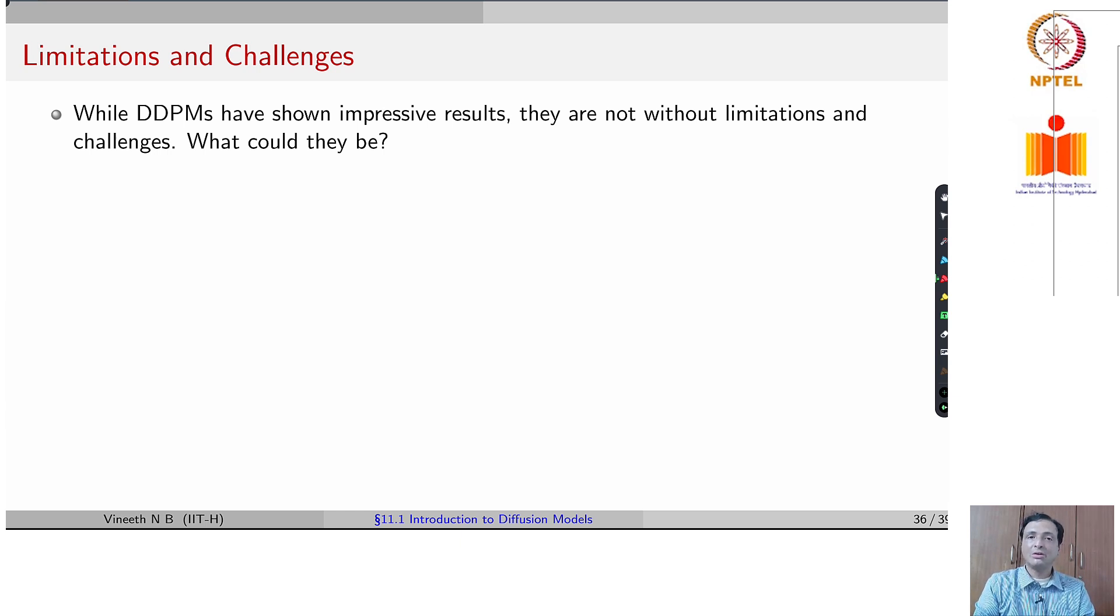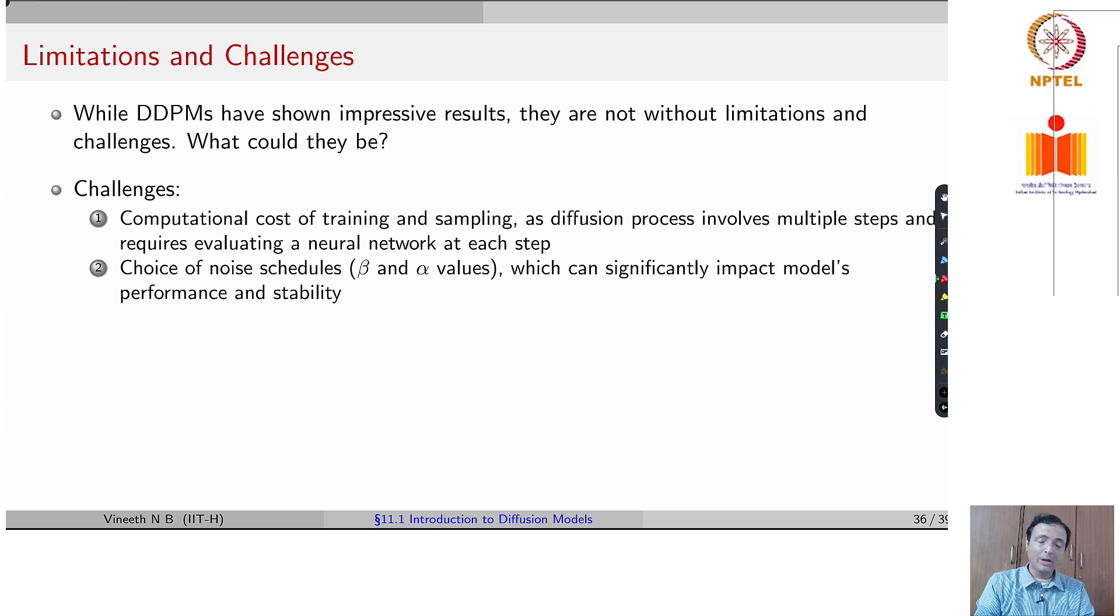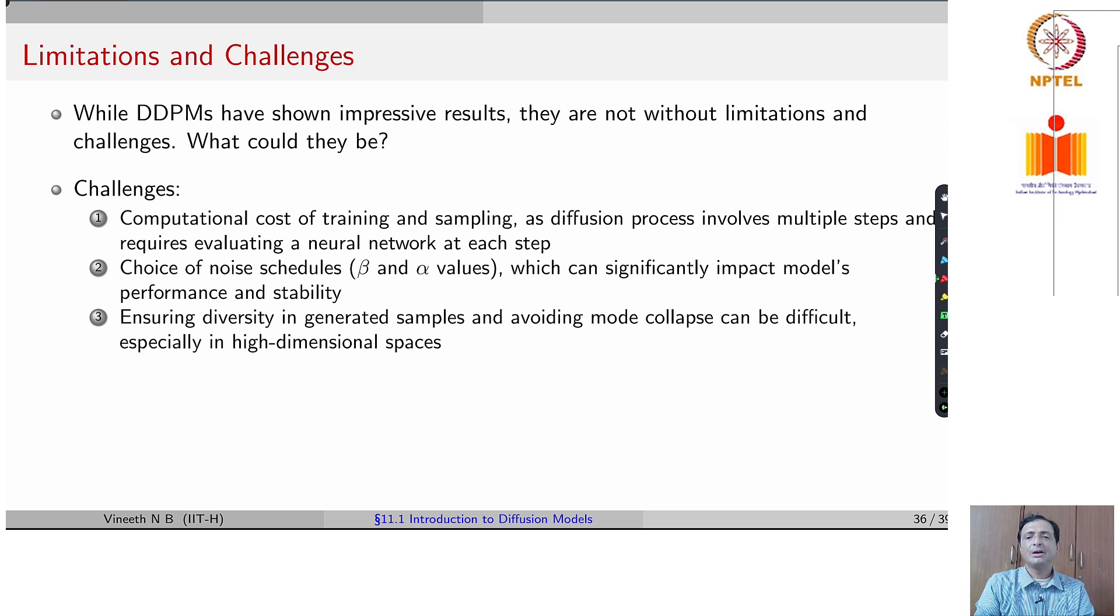Are diffusion models the best solution for deep generative models? Not really, they do have limitations. Can you think of what kind of limitations DDPMs may have? Here are a few challenges. Firstly, the computational cost of training and sampling. Remember, the reverse process has to go through multiple time steps before you can generate your final output image. That inherently is a slow process and can be computationally involving. As we already mentioned earlier, the choice of the noise schedules Beta Alpha can significantly impact models performance, which means the models are very sensitive to the choice of these values, which is another limitation. And sometimes ensuring diversity in the generation of samples and avoiding mode collapse can also be difficult in high dimensional spaces.